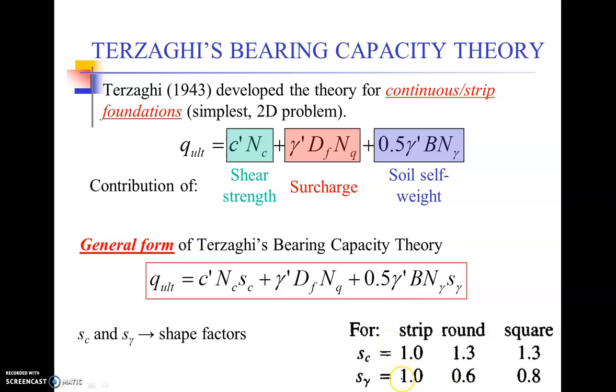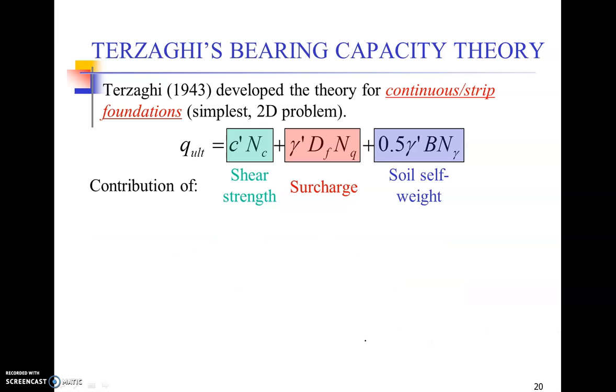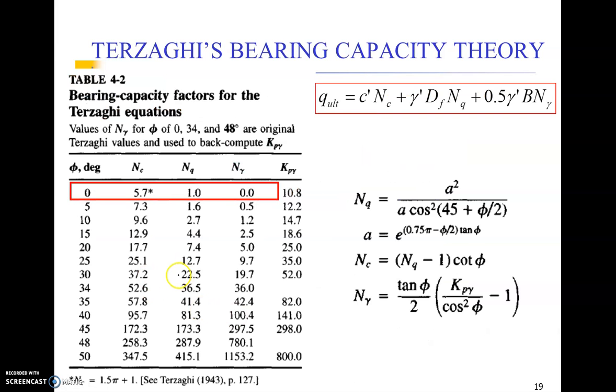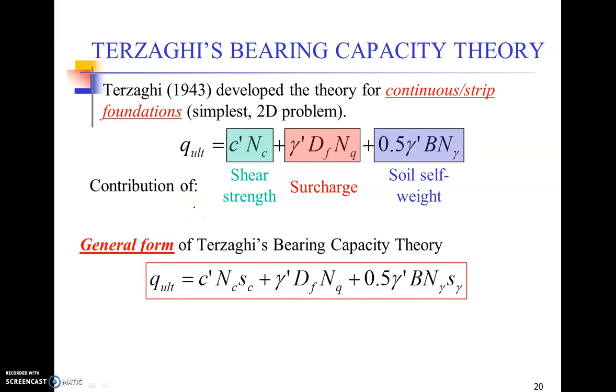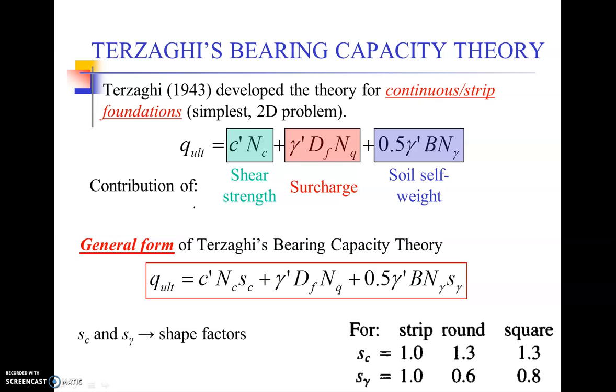For examination point of view, either you will be provided these formulas and these values and tables, but in case you get phi equals to 0, we expect that you should remember this value of Nc, Nq, and N gamma that I've highlighted over here. Also, you can make a formula sheet that we may allow upon signing, getting it signed off by any of your teaching staff. It's better to make a formula sheet of your own that will be very helpful during your practices. In the formula sheet you can include these formulas, such tables, and the previous table as well.